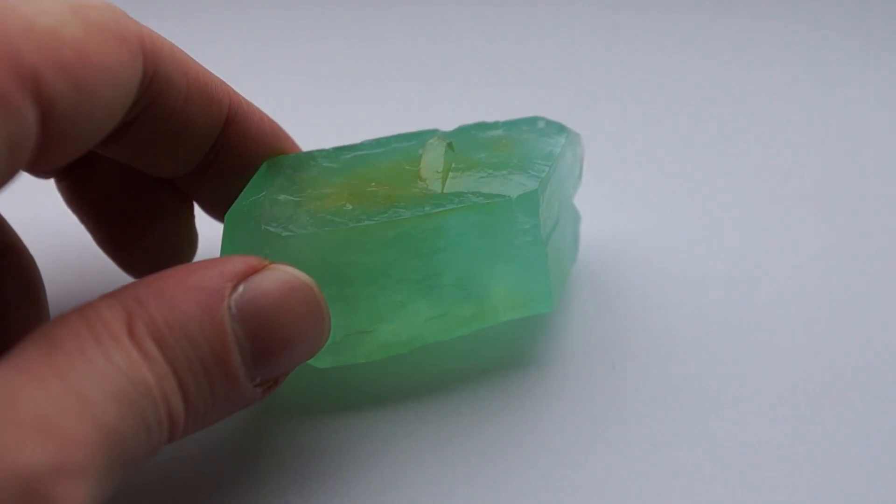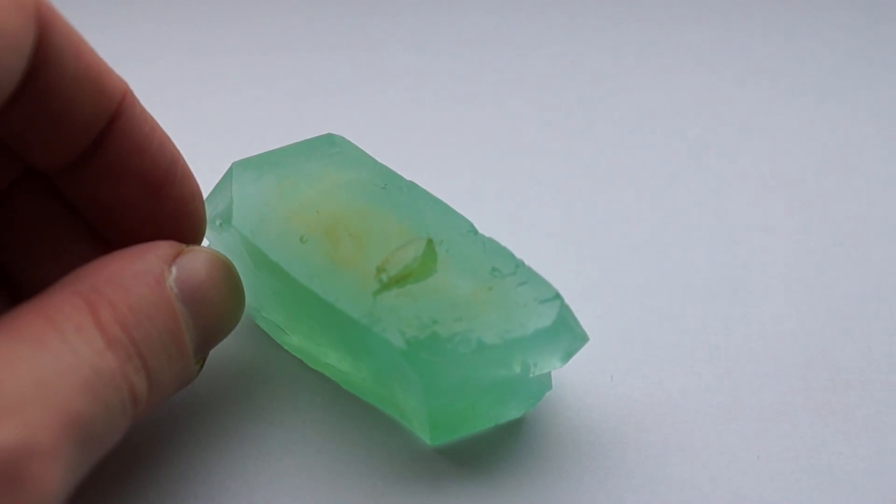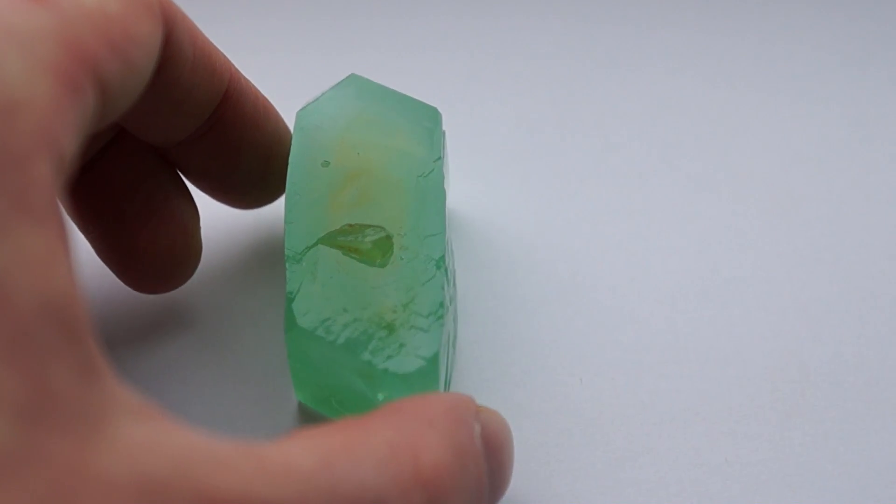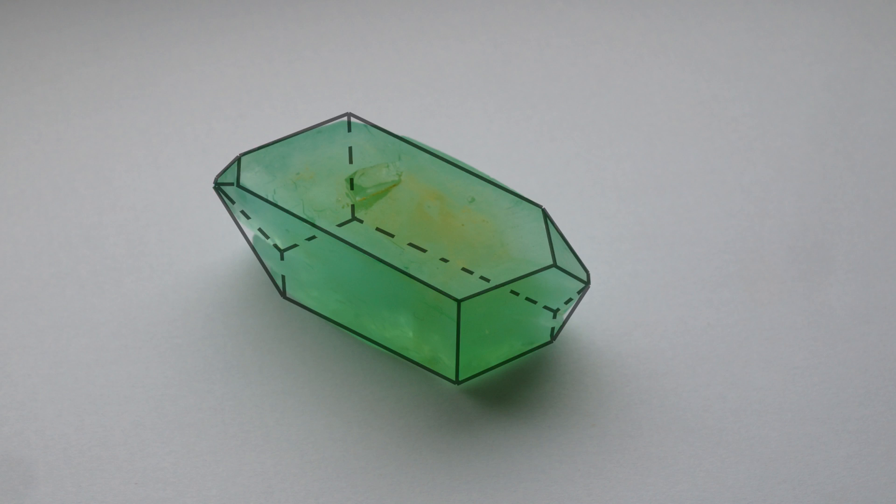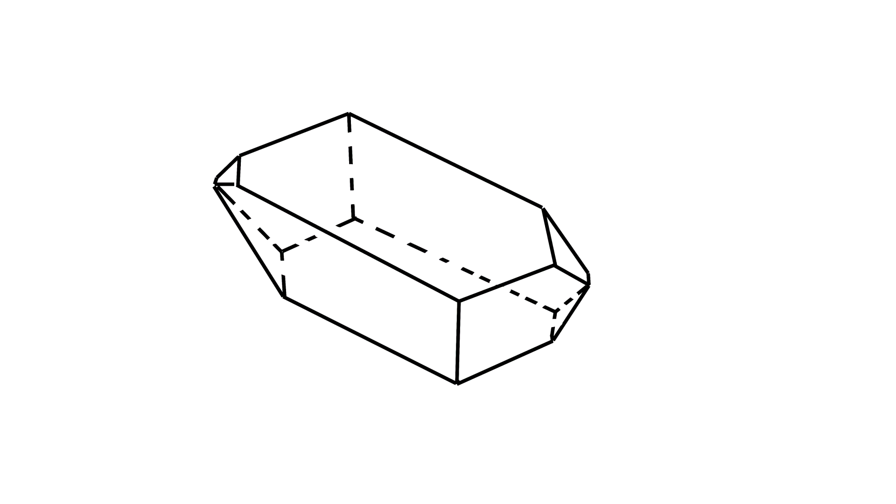When the varnish is dried, you can evaluate the work that was done and examine the crystal more closely. The ideal crystal shape should be symmetrical and have a complex prism. Crystal shape is defined by the crystal lattice of a substance.